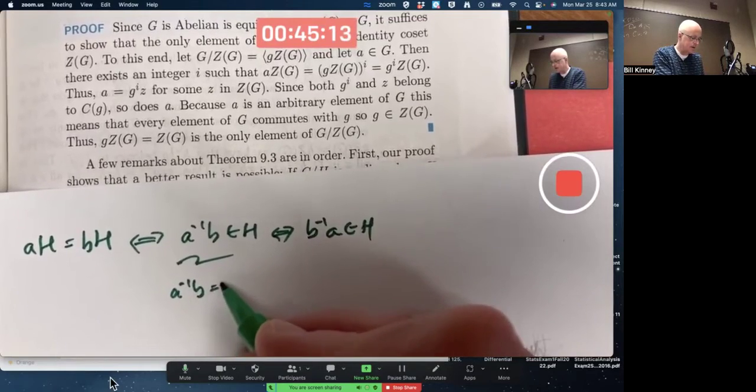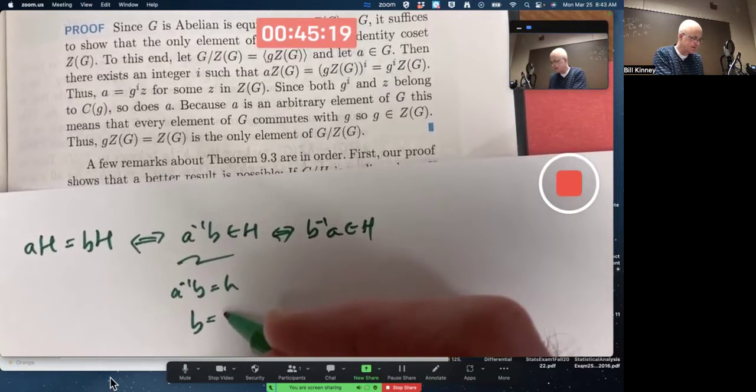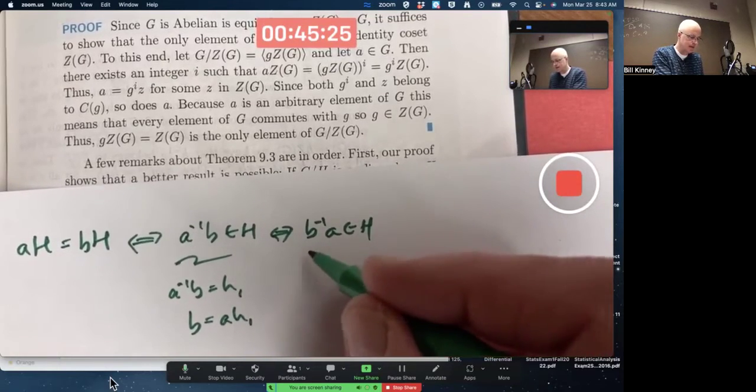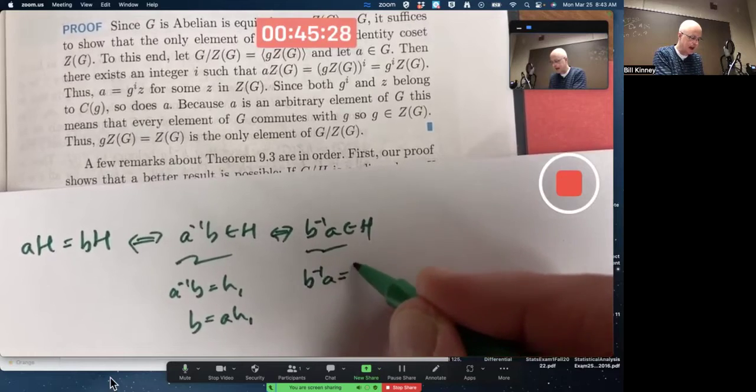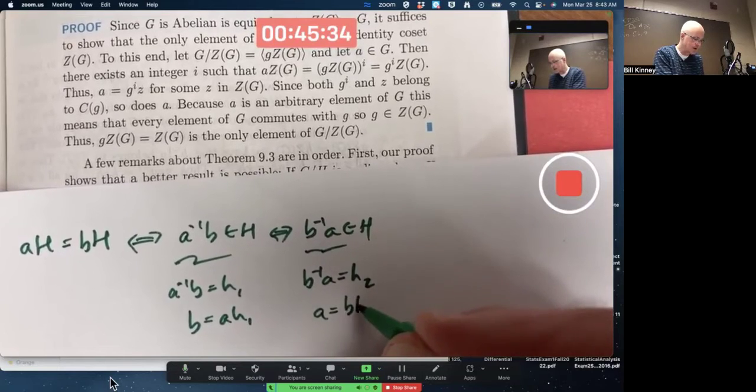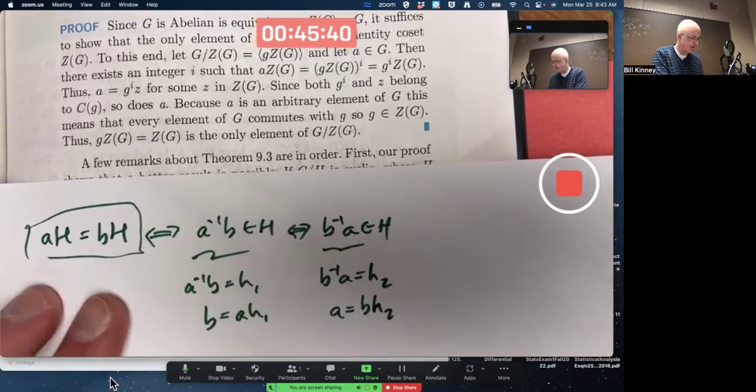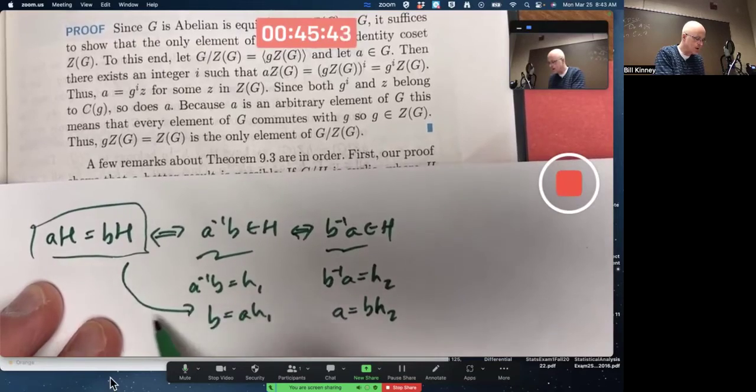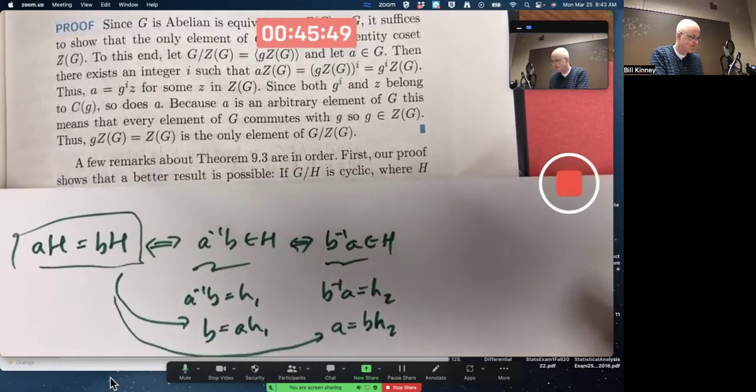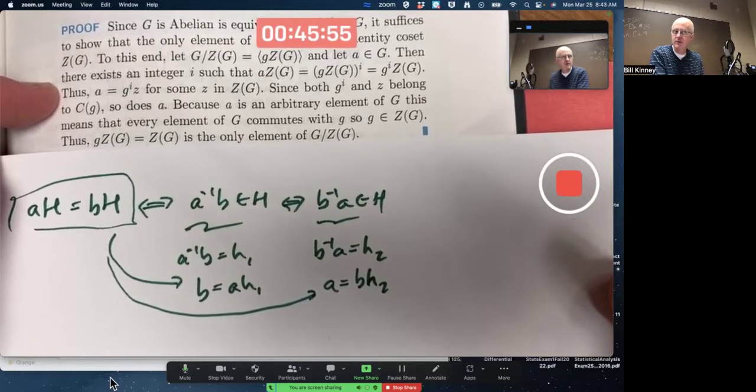This would mean, for example, a inverse b equals h for some h, which would mean b equals ah. Let's call it h1. This would mean b inverse a equals h2 for some h2 in H, which would mean a equals bh2. When you know two cosets are the same, you can conclude relationships between those representatives A and B. That's what the author did here, without really telling you explicitly,